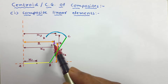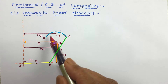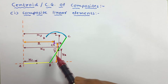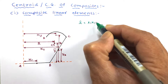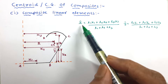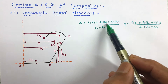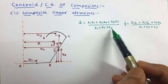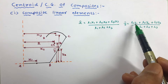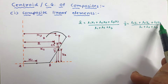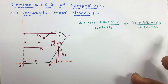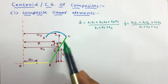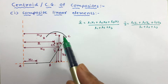We want to work out the centroid of this complete composite figure, meaning we are interested in X̄ and Ȳ. The equation for X̄ is: (L₁X₁ + L₂X₂ + L₃X₃) / (L₁ + L₂ + L₃). And Ȳ = (L₁Y₁ + L₂Y₂ + L₃Y₃) / (L₁ + L₂ + L₃). Here, part 1 is line AB, part 2 is line BC, and part 3 is arc CD.